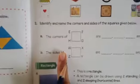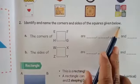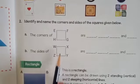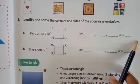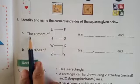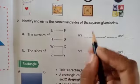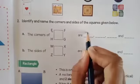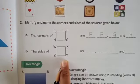Now question number two: identify and name the corners and sides of the square given below. The corners of square E, F, G, H are: first E, next F, next G, and last one is H. Like this you have to write the sides of these corners.